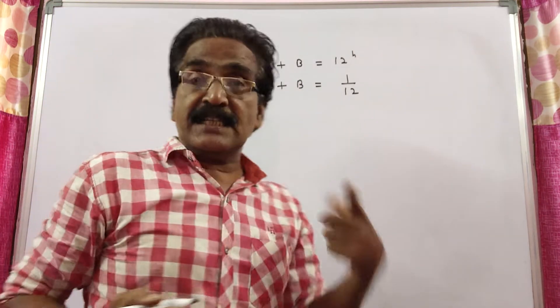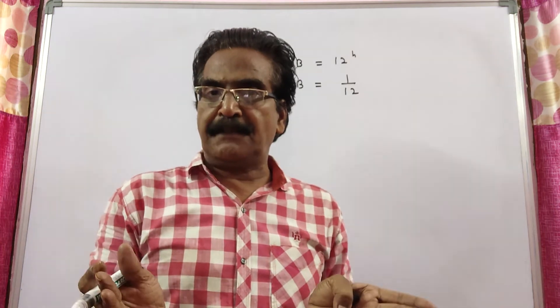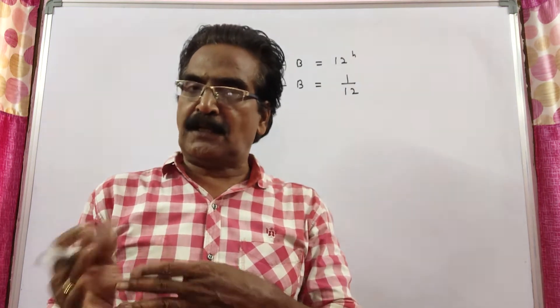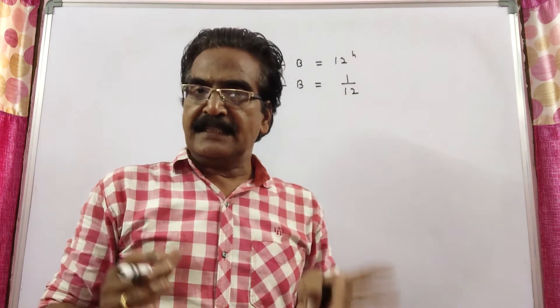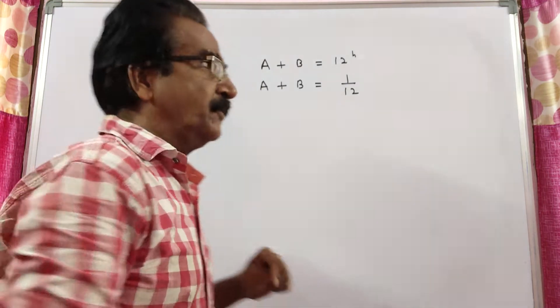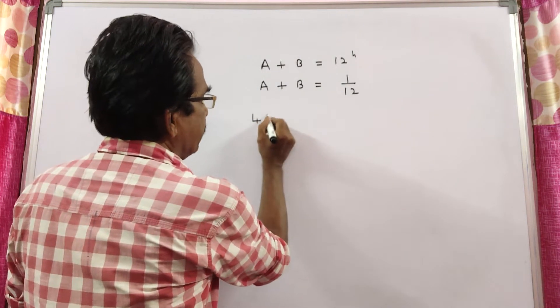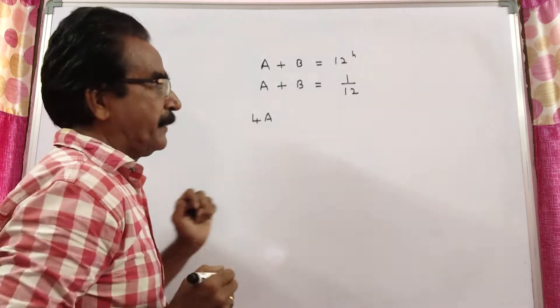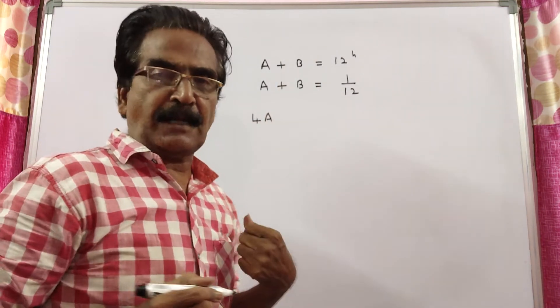It is given that one pipe is larger diameter and the other pipe is smaller diameter. It is said that if the larger pipe is used for 4 hours, that is the work done by larger pipe. Say A is the larger pipe and B is the smaller pipe.